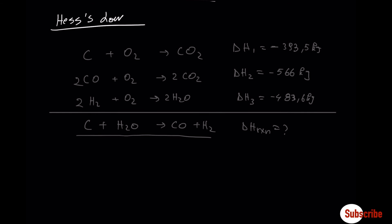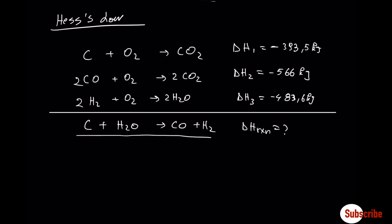Now Hess's Law, named after a German scientist. Hess said that if a chemical equation can be expressed as the sum of a series of steps, then the change in enthalpy for the overall equation is the sum of the changes in enthalpy for each step. Some equations are difficult to measure enthalpy directly, but by summing known steps we can find the change in enthalpy of our desired equation.